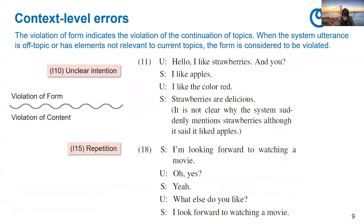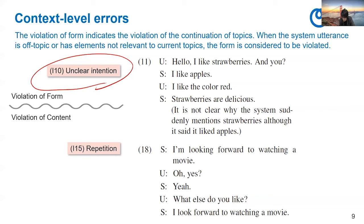As for the context-level errors, the violation of form in this level indicates the violation of the continuation of topics. When the system utterance is off-topic or has elements not relevant to current topics, the form is considered violated. For example, we have I10 unclear intention. The user says 'Hello, I like strawberries, and you?' The system says 'I like apples.' The user says 'I like the color red.' The system says 'Strawberries are delicious.' It is not clear why the system suddenly mentions strawberries, although it said it likes apples. So the intention is not clear, and we consider it a violation of form.